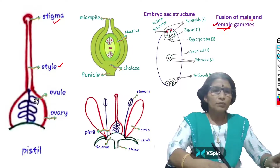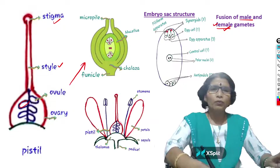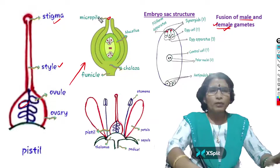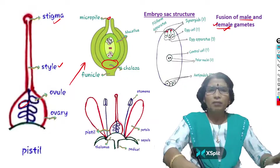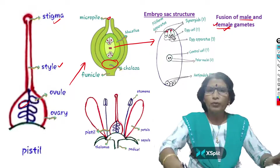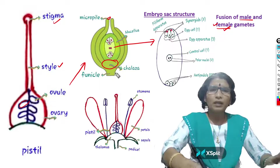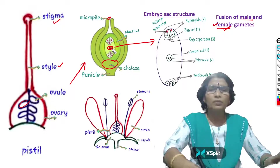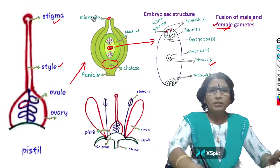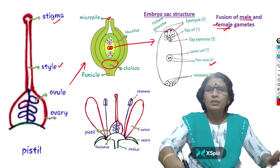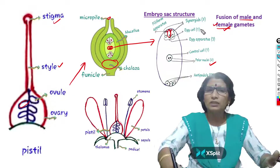Inside the ovary, ovules are present. In the ovule, a small pore-like structure called the micropyle is present. Exactly opposite to the micropyle, the chalaza region is present. Inside the ovule, an egg-like structure called the embryo sac is present. In the embryo sac, towards the micropyle three cells are present and towards the chalaza three cells are present. In the middle, one single cell — the central cell — is present, containing two polar nuclei. The three cells towards the micropyle form the egg apparatus; the middle cell is the egg cell or female gamete.